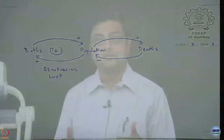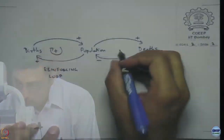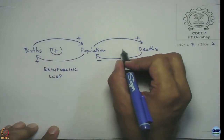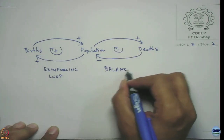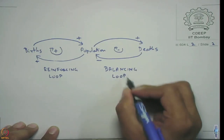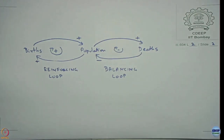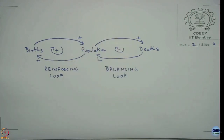Looking at population and deaths: as population increases, more deaths happen; as more deaths happen, population decreases, and at some point it can reach a sort of equilibrium. As population increases, deaths can increase, and as more deaths occur, the population comes down. This loop is called a balancing loop — it limits the growth of population.